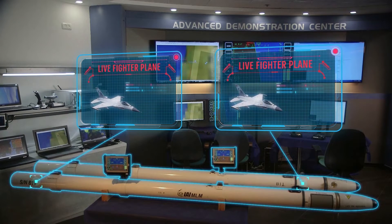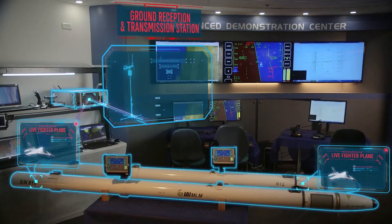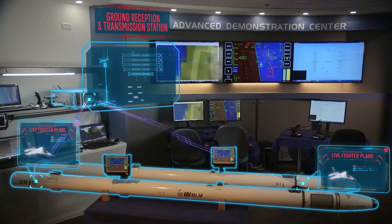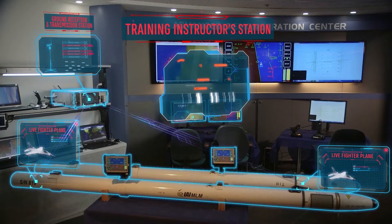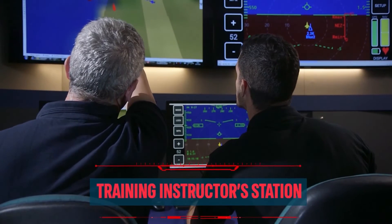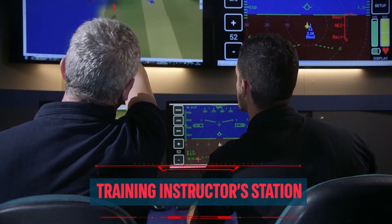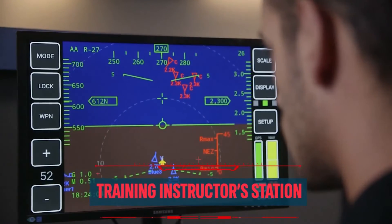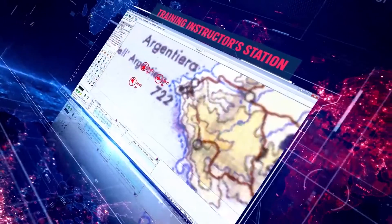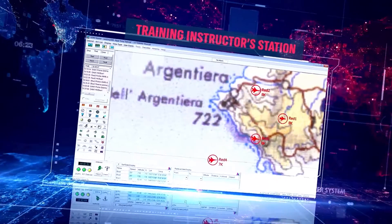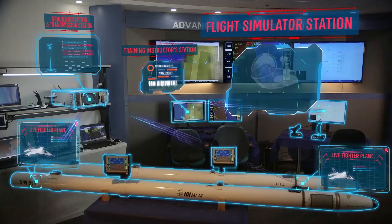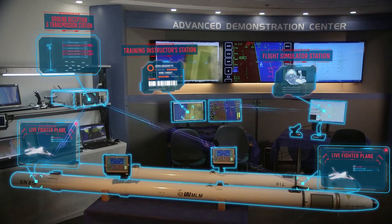These aircraft are connected by RF communication to a ground reception station, which is not mandatory in the live sessions. The training instructor station facilitates full control of the constructive exercise entities, including the ability to create, delete, and change the entity's doctrine. The flight simulator data is uplinked into the network through the ground reception station.